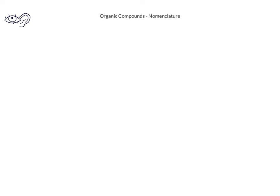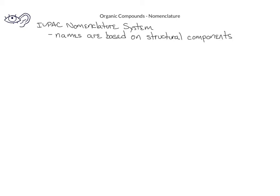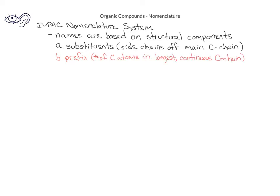While it's useful to be able to draw organic compounds, it's also helpful to be able to name your favorite organic compounds. In order to do this, chemists have developed a nomenclature system that's very systematic, because the names of the compounds are based specifically on the components of the organic compound structure. The prefix part of the name indicates the number of carbon atoms in the longest continuous chain, which is also called the parent chain.